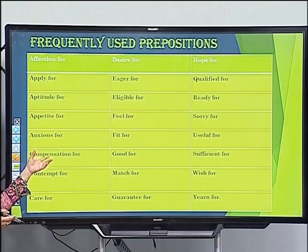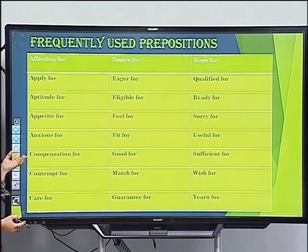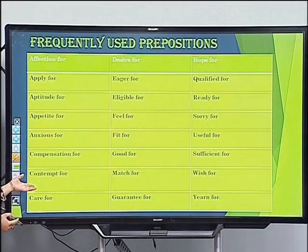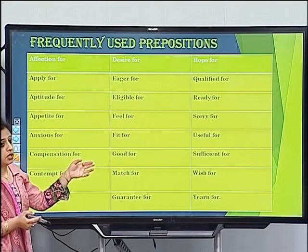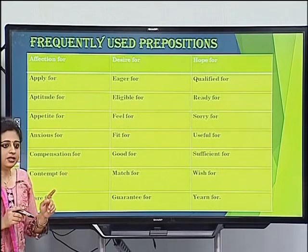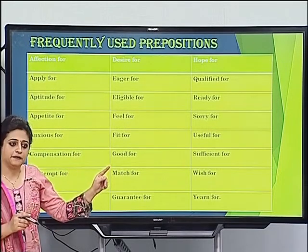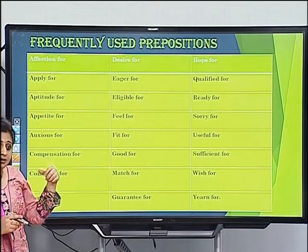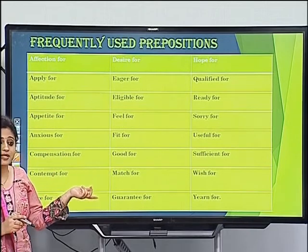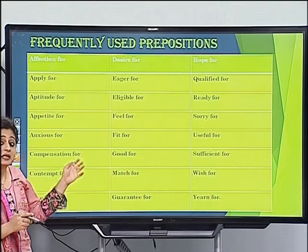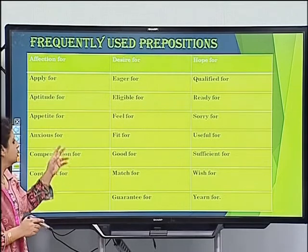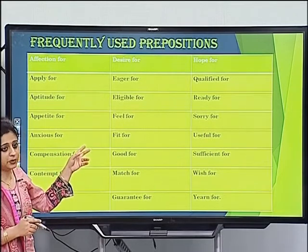'Appetite for' means a craving or desire for something. 'Anxious for,' 'compensation for,' 'contempt for,' 'care for,' 'desire for.' Note that 'desire' takes 'for' after it, while 'desirous' takes 'of.' Desire for something means the wish, whereas desirous of means being eager.